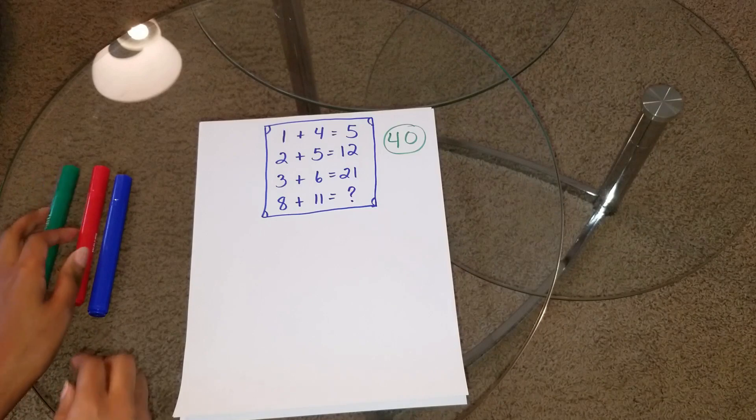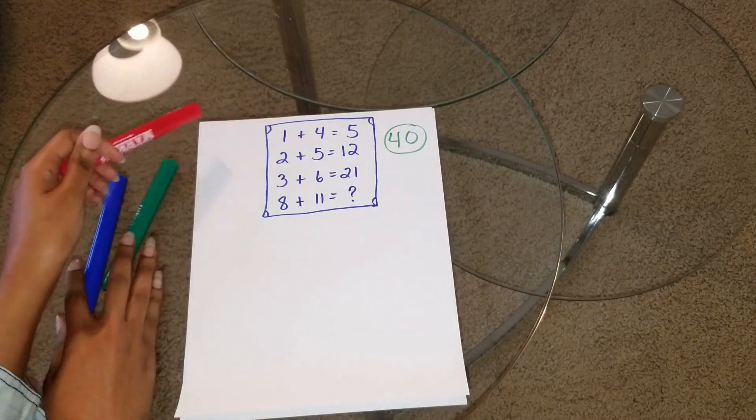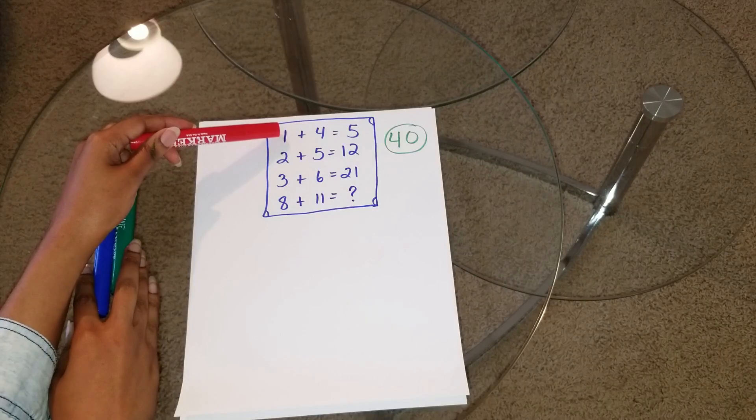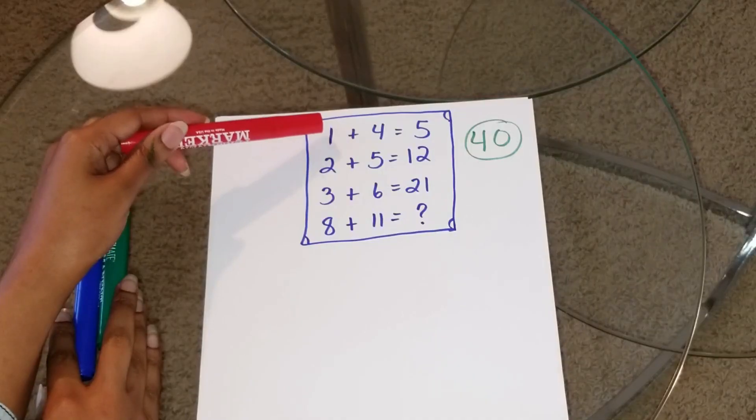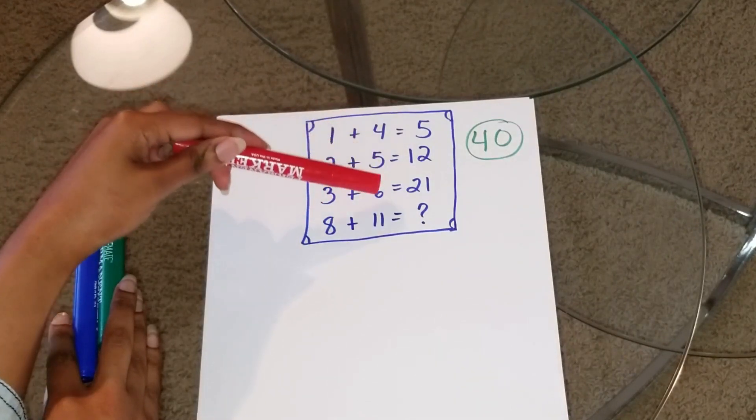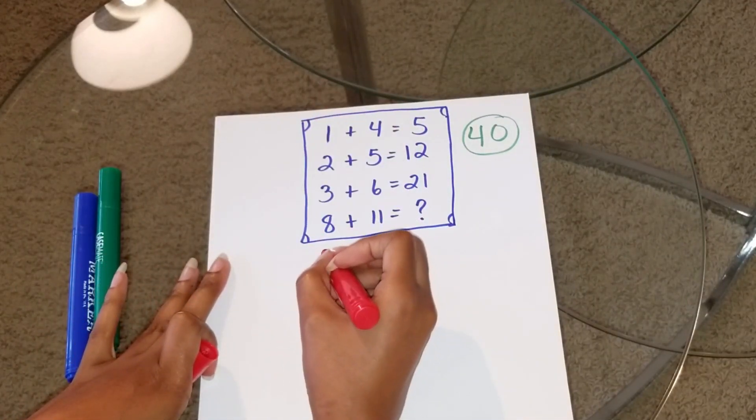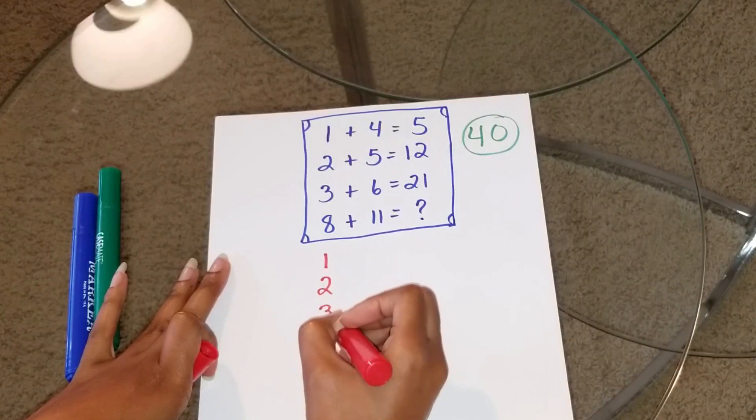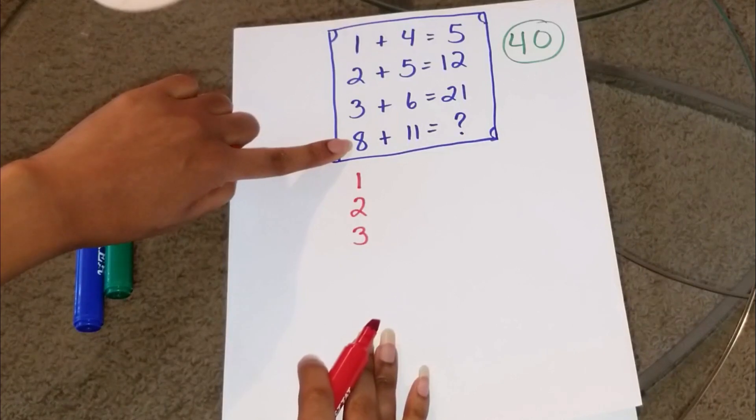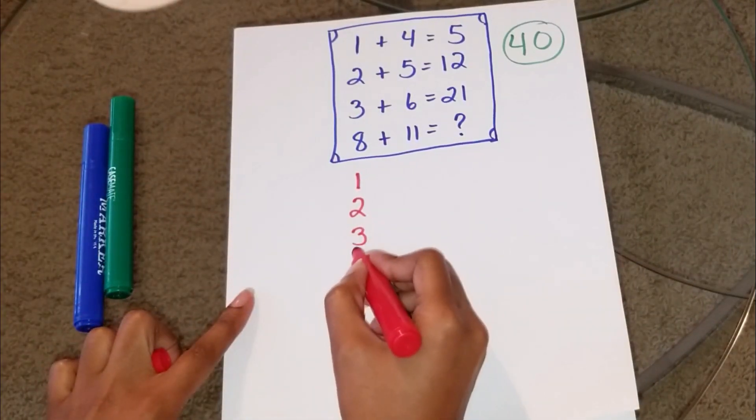We're going to take a look at the first three lines, right? You have 1 plus 4 is 5, 2 plus 5 is 12, and 3 plus 6 is 21. Look at the first three lines. This is going in ascending order. 1, 2, 3. 4, 5, 6. So, if we keep going in that order, then this actually becomes 1, 2, 3. Everything between the two lines is left out intentionally because why? It's a mathematical riddle. So, you need to add those lines.